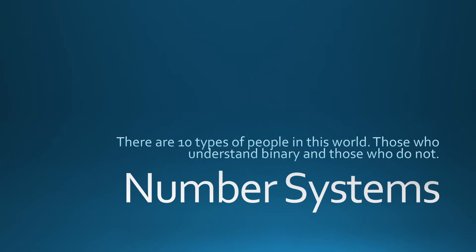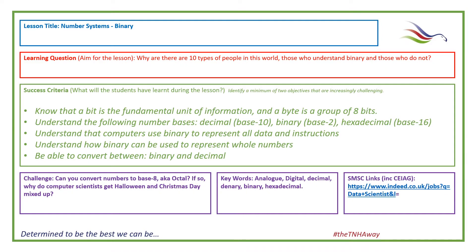We're on to a new topic now, nothing to do with programming. This is all about how computers deal with numbers. The topic is called number systems — it's part of data representation. We're going to talk about digital and analogue, and then we're going to go into binary. A key question: why are there 10 types of people in this world — those who understand binary and those who do not?